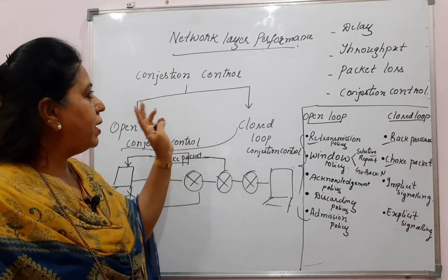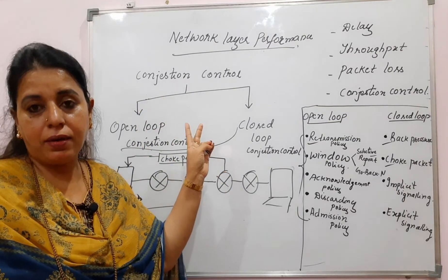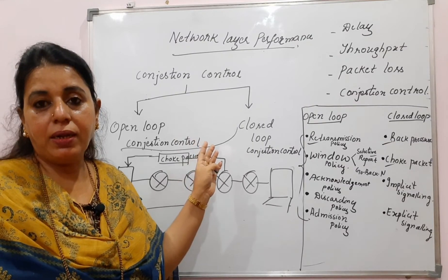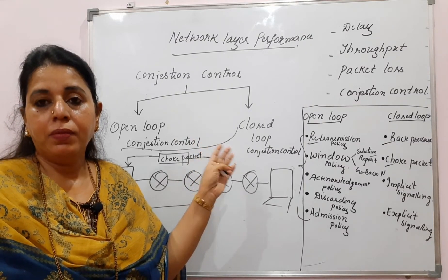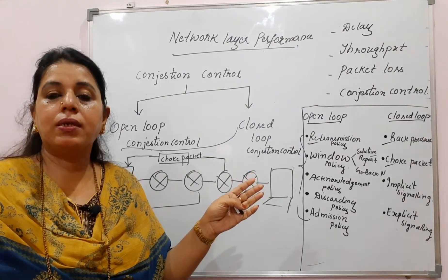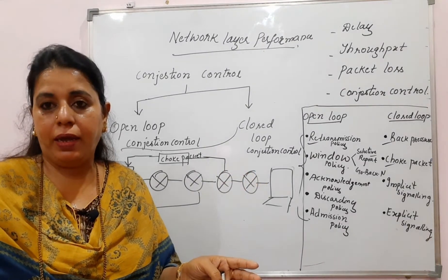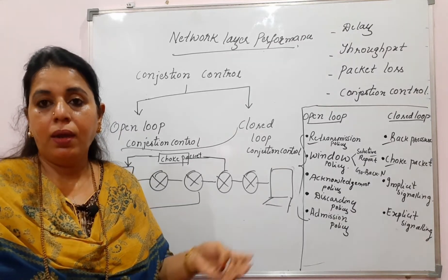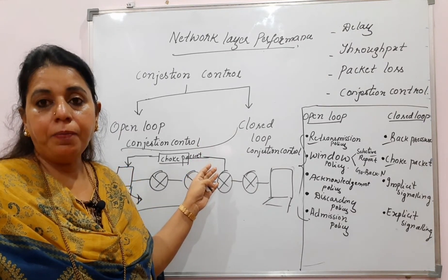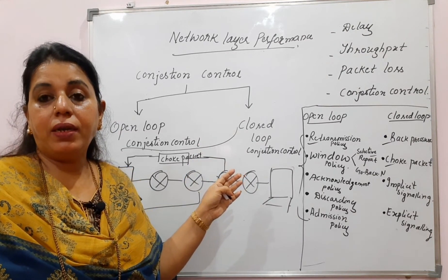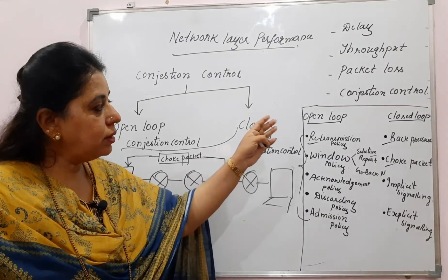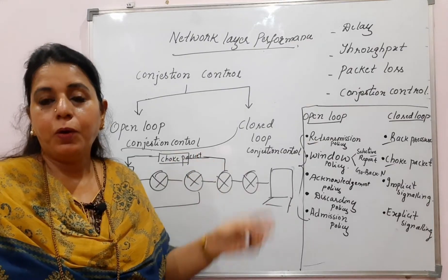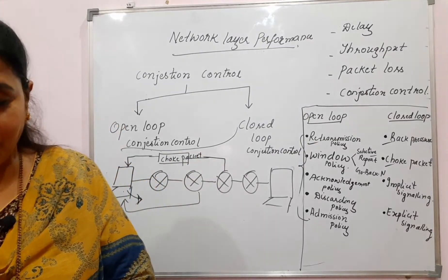This concludes the topic of congestion control for the network layer. Remember, congestion control is fully implemented in the transport layer with specific algorithms, but at the network layer, what is implemented is this part — closed loop and open loop congestion control. I hope you have understood this topic.